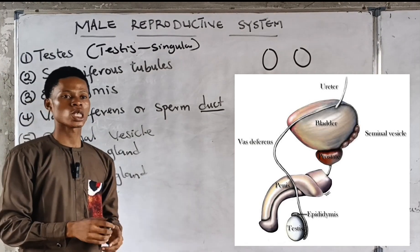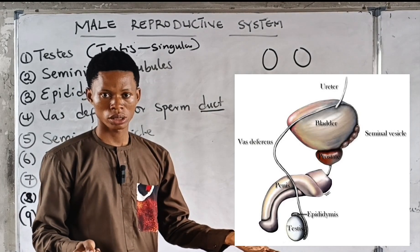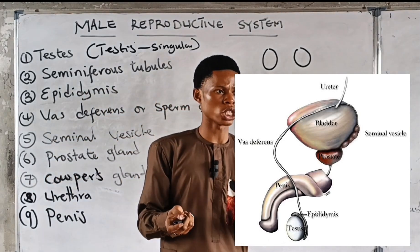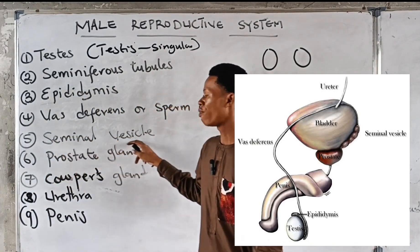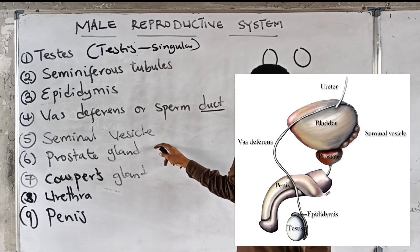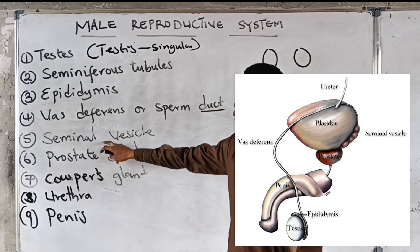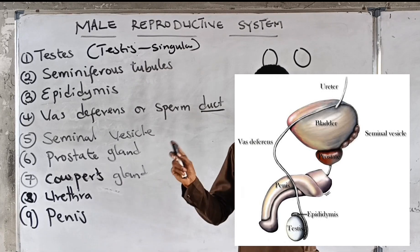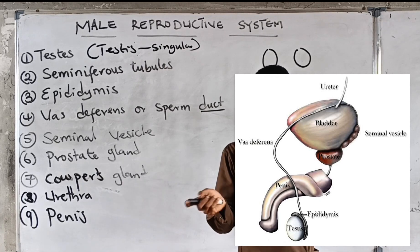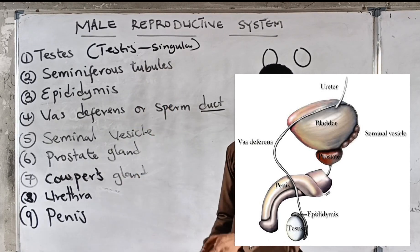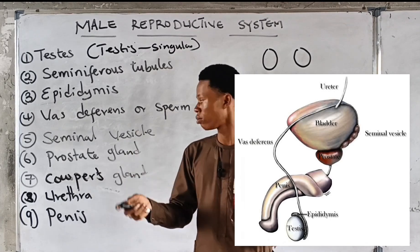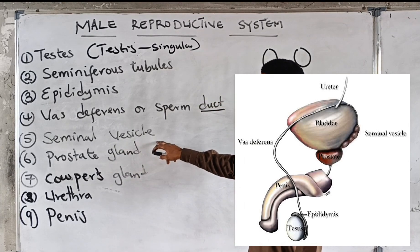Sperm is stored temporarily in the epididymis. Sperm is stored permanently until ejaculation in the seminal vesicle. Sperm is produced in the seminiferous tubules — please don't confuse them, as this distinction always comes up in exams. The seminal vesicle is where sperm is stored until ejaculation.